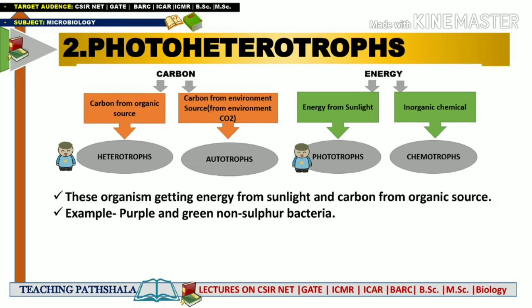Photo-heterotrophs combine the concept of phototrophs and heterotrophs. Photo-heterotrophs are those microorganisms which get their energy from sunlight and their carbon from organic sources. The best examples of photo-heterotrophs are the purple and green non-sulphur bacteria.